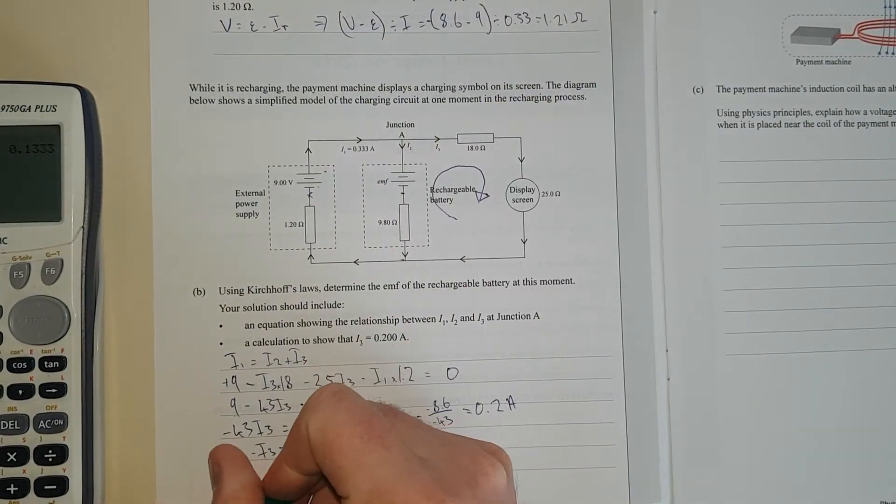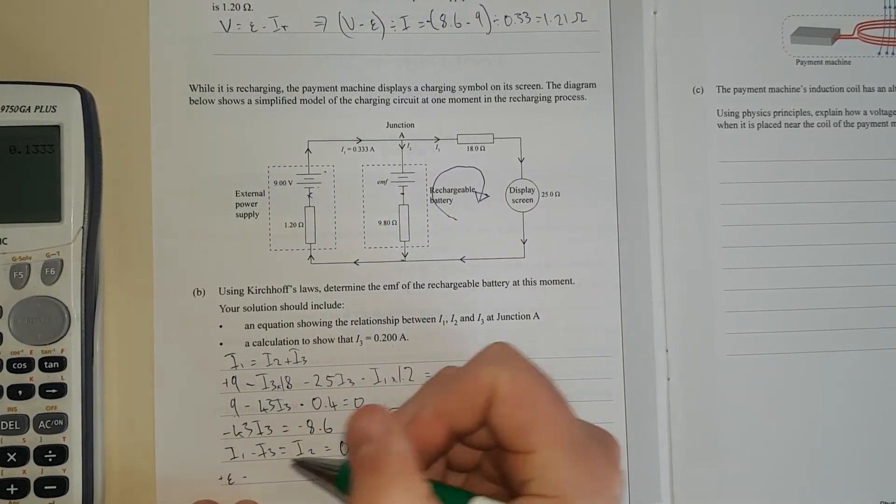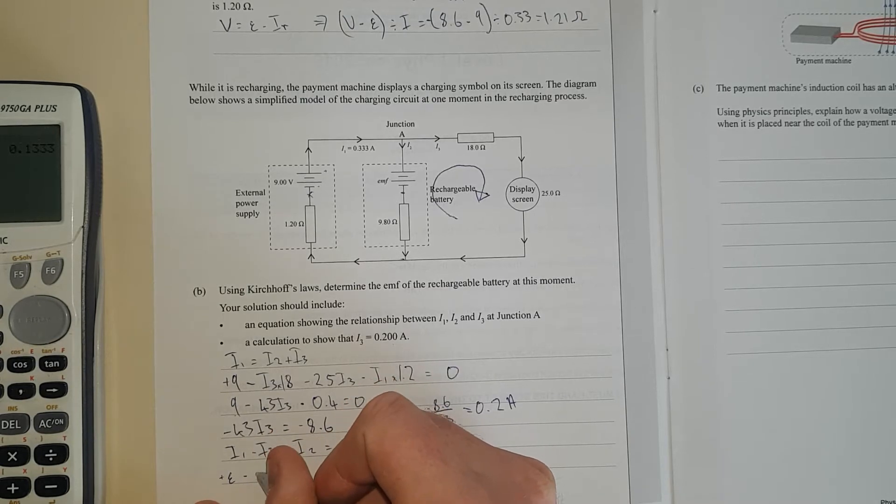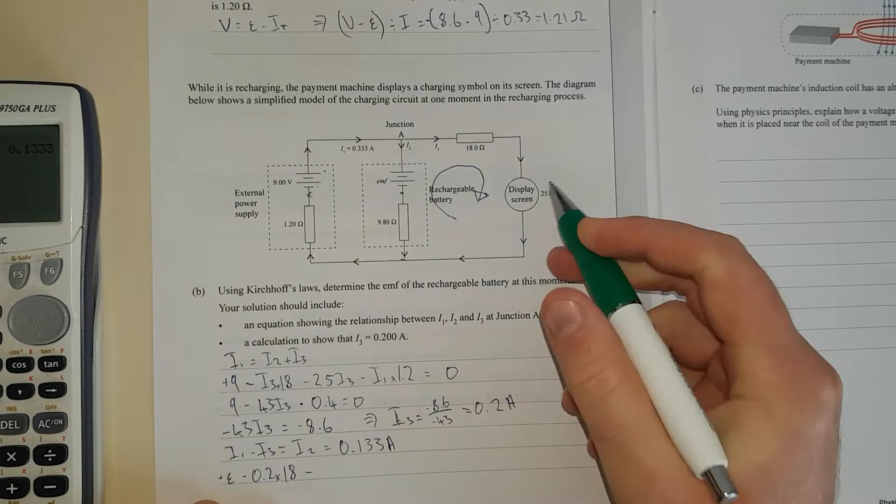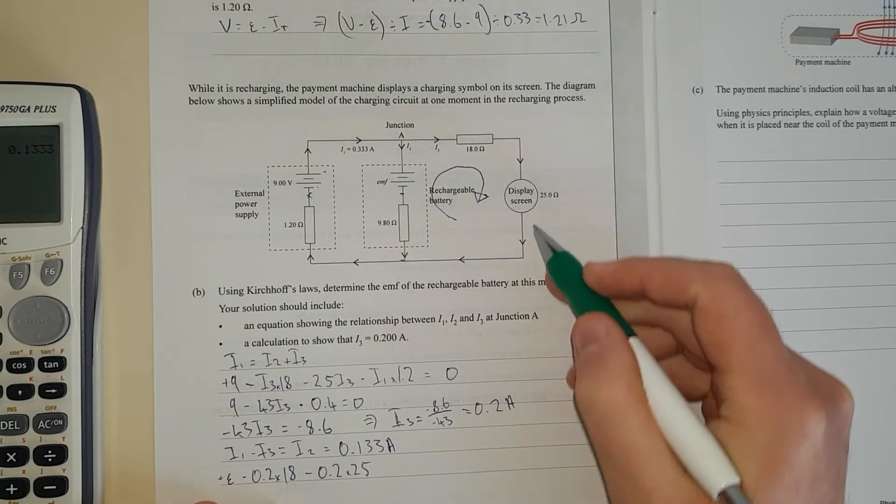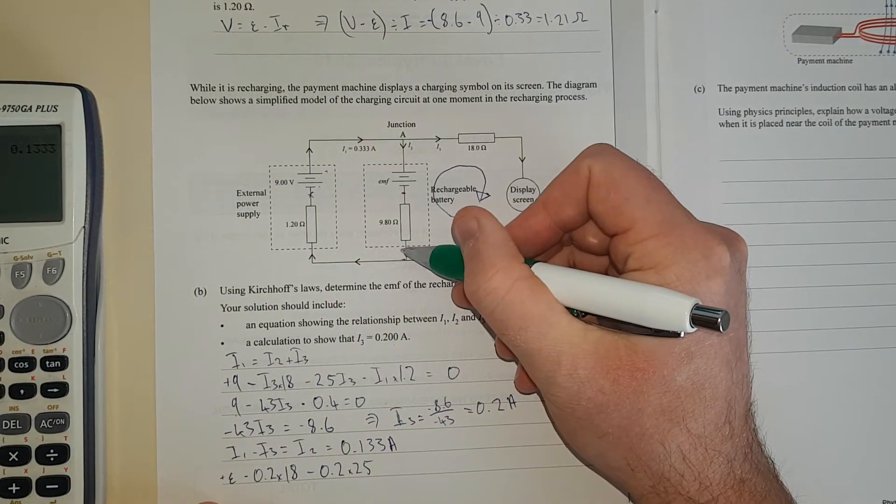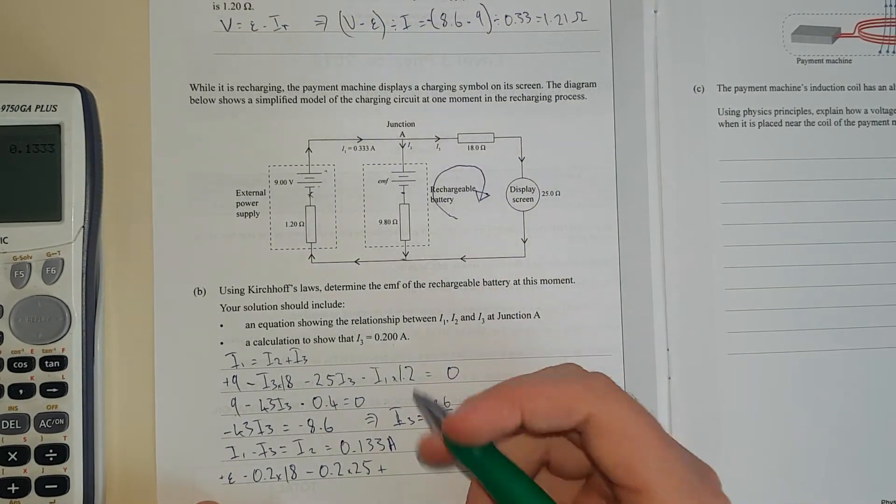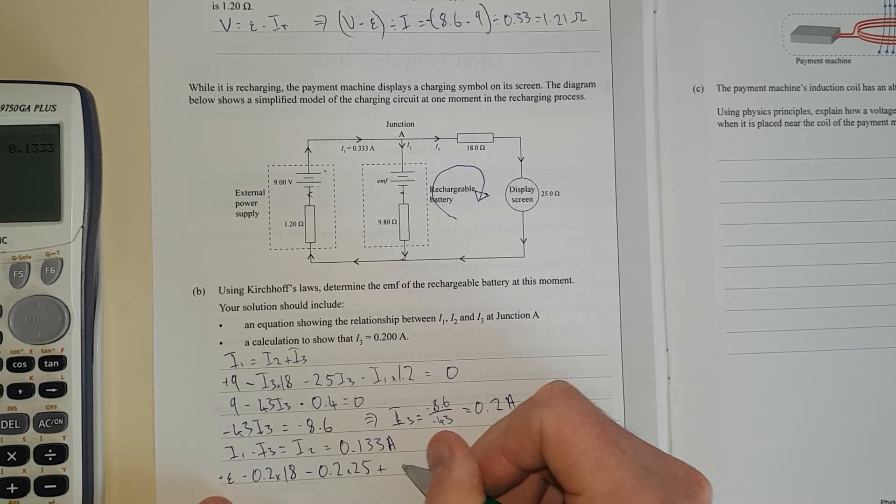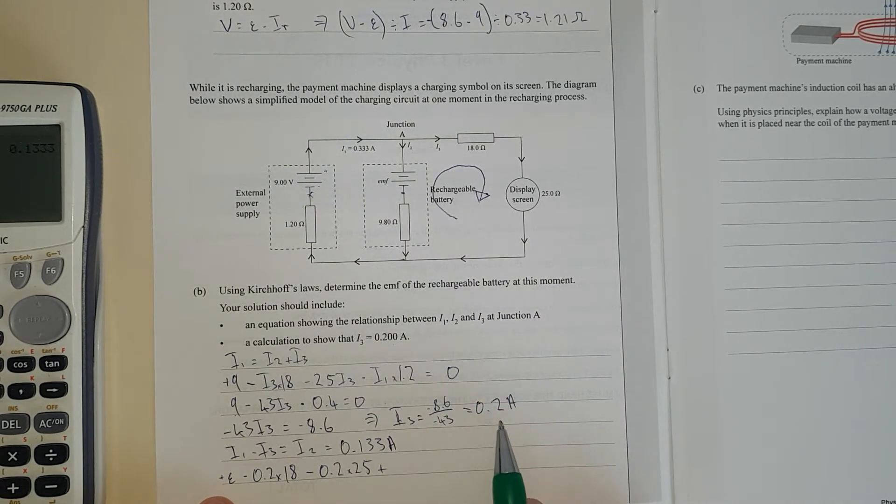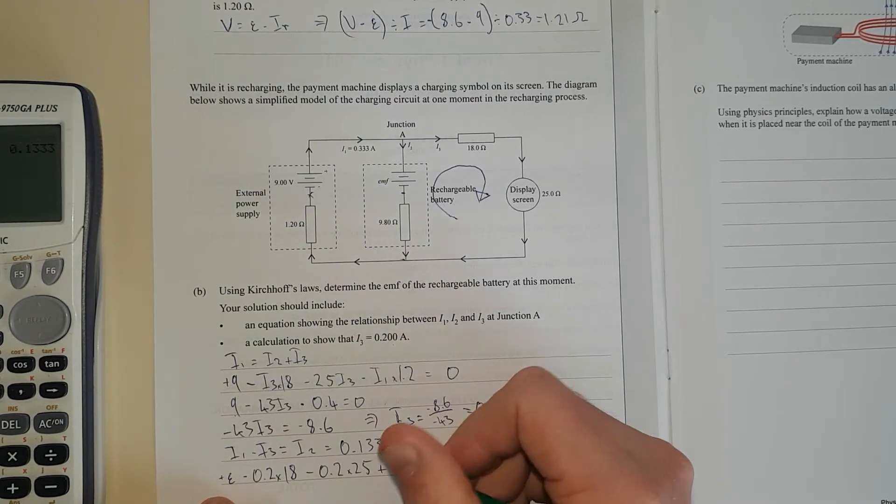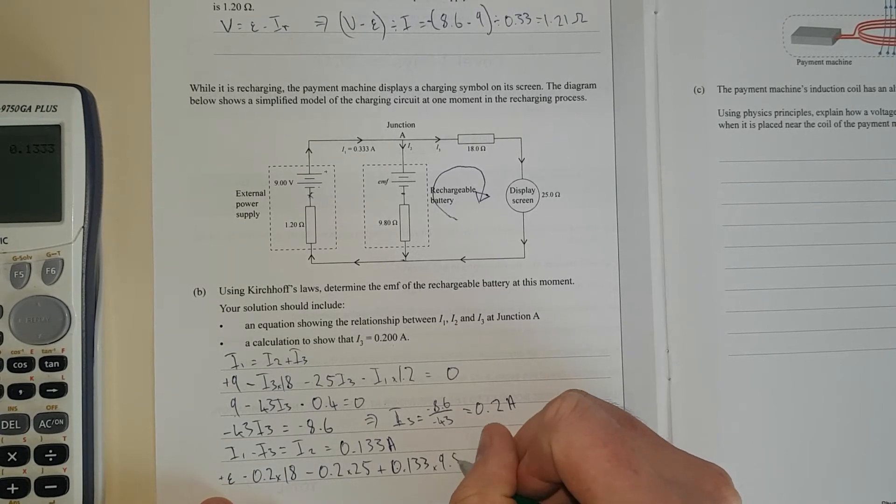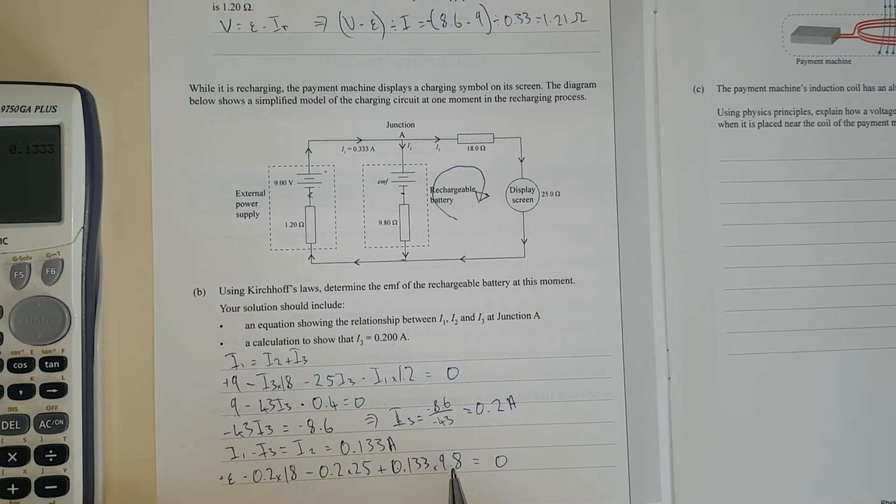And then I'm going minus, and that is going to be, what's I3? I3 is 0.2. So minus 0.2 times 18. And then I'm going minus 0.2 times 25. And then I'm going against this current, because we can see it has a current flowing downwards. I2 is flowing downwards. So we're going to go plus, because we're going up the stream of the river. We're gaining potential energy. So it's going to be plus I2, which is 0.133, times 9.8, equals 0. So we can see all these here are just numbers. So I'm going to add them all up.